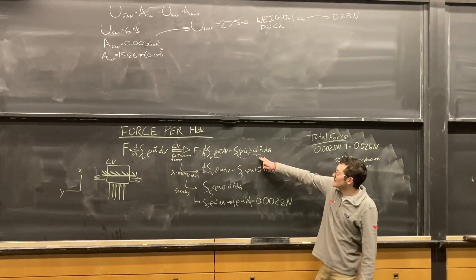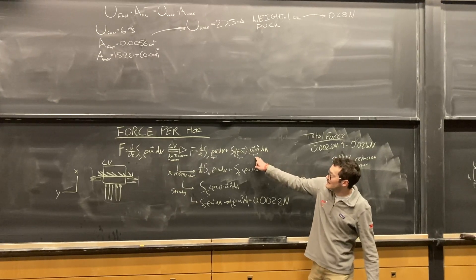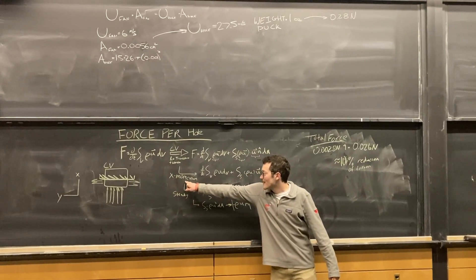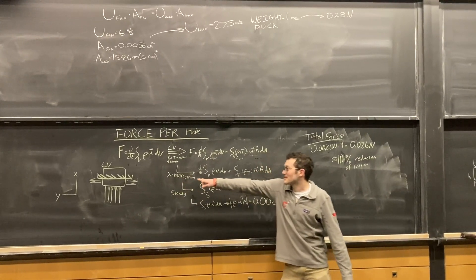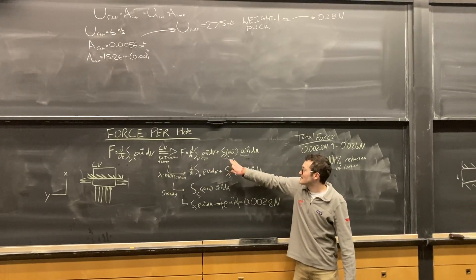Then by only looking at the x momentum, since that's the only portion that we're going to care about, we can simplify these vector terms, but still have this term here vectorized that is the flux across the surface.